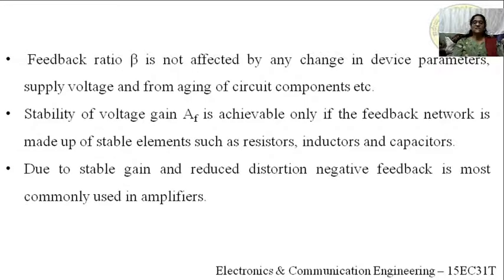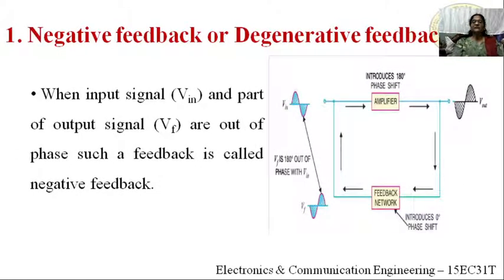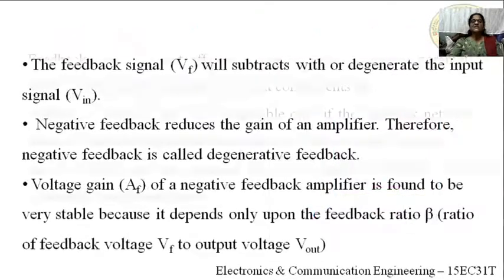Resistors, capacitors, and inductors in the feedback network are not affected by any change in device parameters, supply voltage, or aging of circuit components. Therefore, the gain of the amplifier with feedback does not change significantly. Although amplifier gain A may change, since beta is constant, the overall system gain AF remains approximately constant — this is called stable gain.